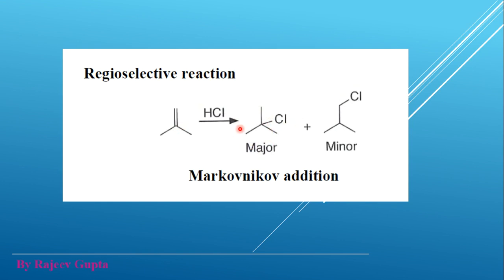We get the Markovnikov product as the major product, where hydrogen attaches to the more substituted carbon and chlorine attaches as the minor product configuration. In Markovnikov addition, we get two products that are positional (structural) isomers — regioisomers — of each other. Here regioselectivity is observed, where major and minor types of regioisomers are formed.